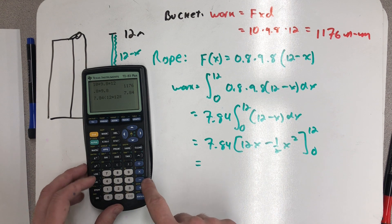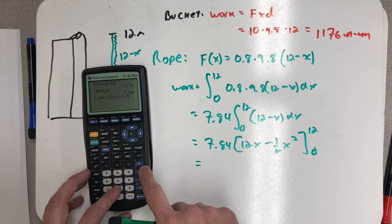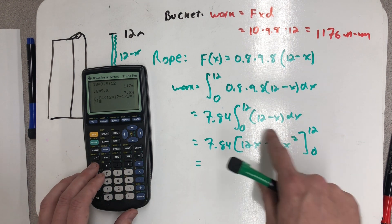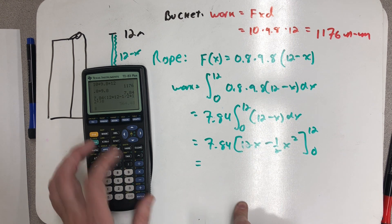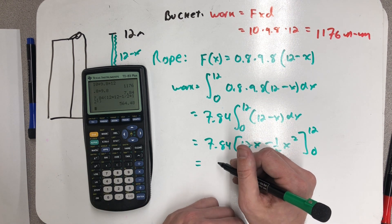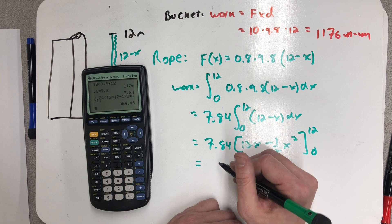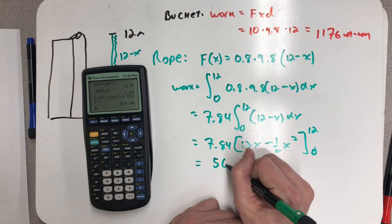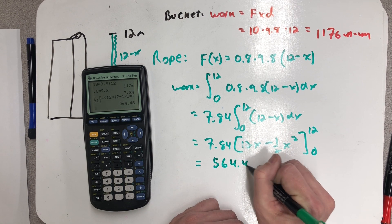Evaluate from 0 to 12. So I have 7.84 times, well, 12 times 12 minus 1 over 2 times 12 squared. And I could do some of that arithmetic in my head if I so chose, but I get 564.48 newton meters.